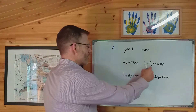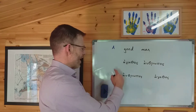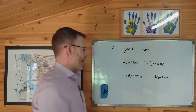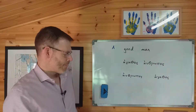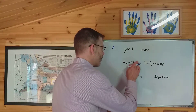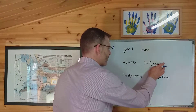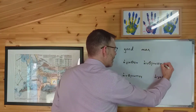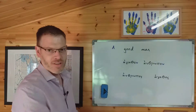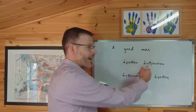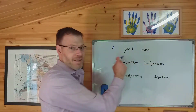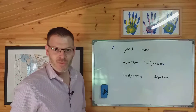In this case, obviously, it's 'agathos anthropos' — 'a good man' — or 'anthropos agathos' — 'a good man.' 'A good man' or just 'good man' are written the same, and context will help you to determine which is which. And obviously, if it's performing a different function in the sentence — if it's the object of a verb rather than the subject — then you can just decline the noun, and you'll decline the adjective as well.